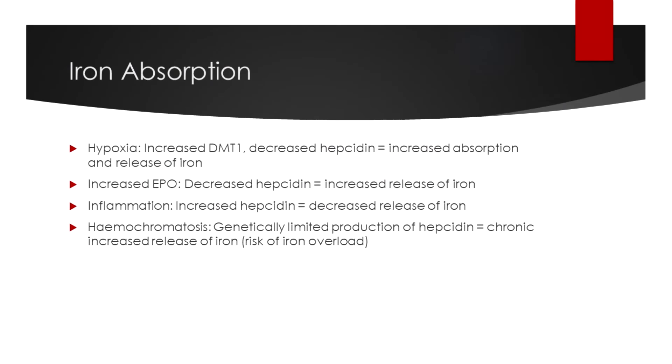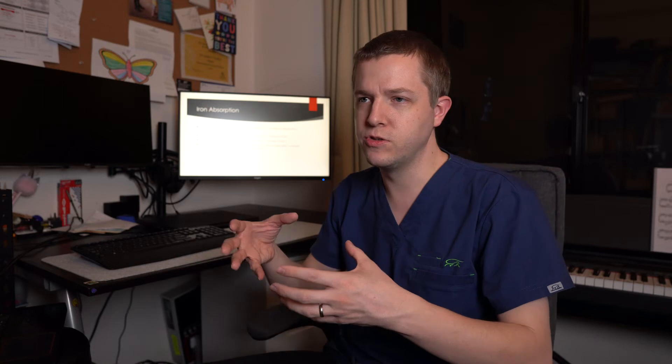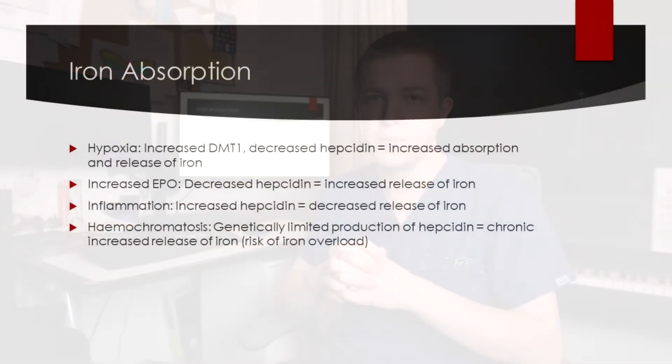If you've got inflammation, hepcidin will increase and that will degrade more of the ferroportin, and you get a decreased amount of iron circulating, which is not very helpful if you're also anemic at the same point as having inflammation. The inflammation can occur due to autoimmune conditions or through sepsis or other infections or other treatments that someone might be undergoing.